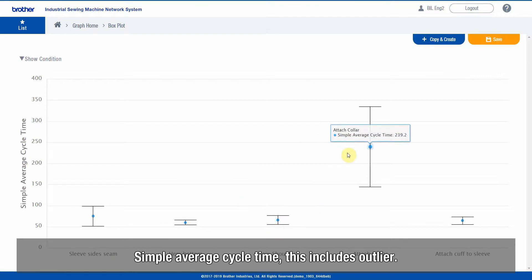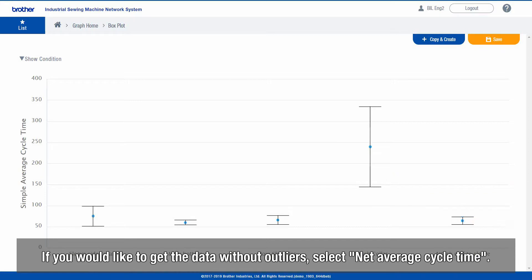Simple Average Cycle Time, this includes outlier. If you would like to get the data without outliers, select Net Average Cycle Time.